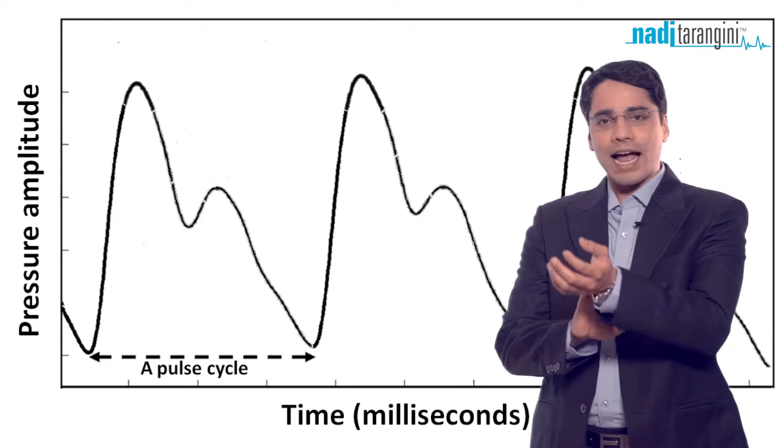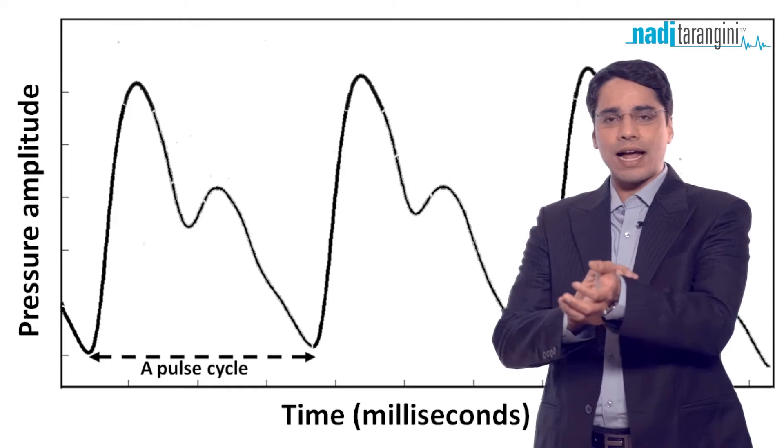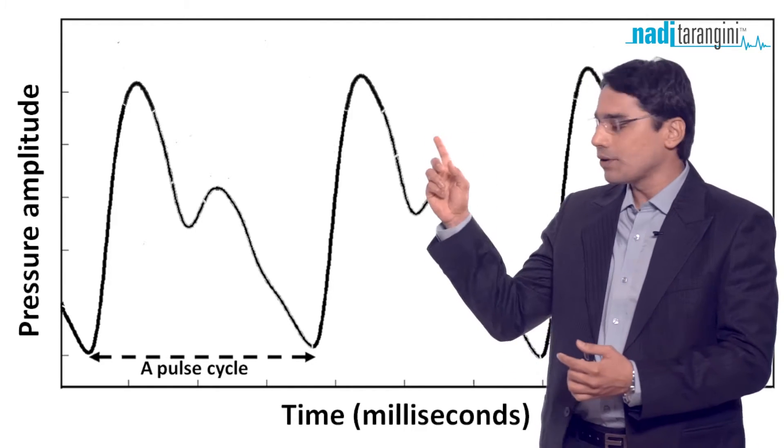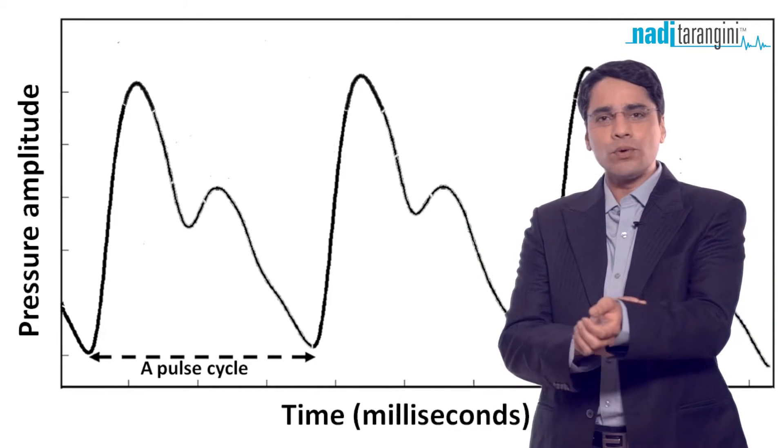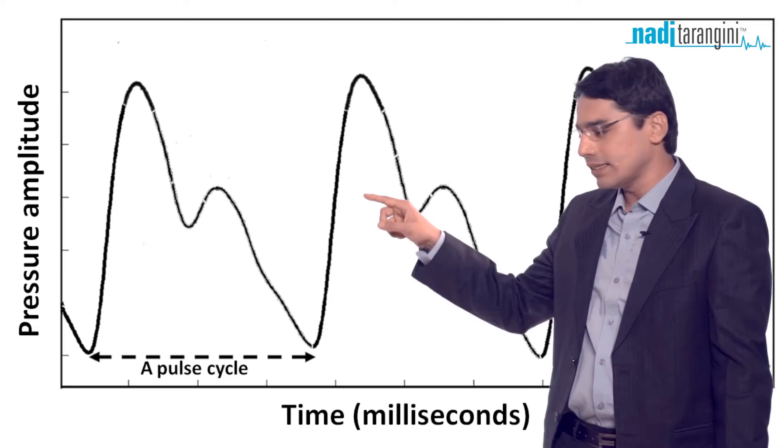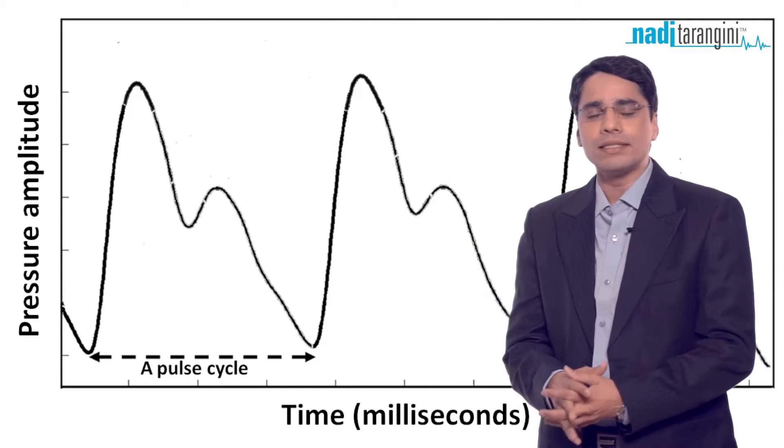When the Nadi has high pressure energy or high strength, you see a high point in the waveform. When there is no strength or you don't feel the pulse much, it goes down to what we call the baseline.